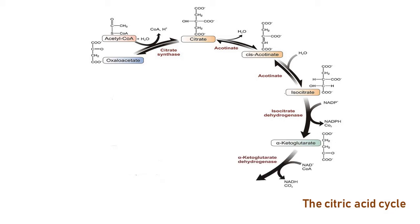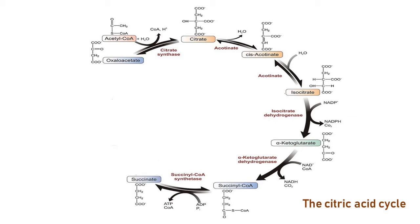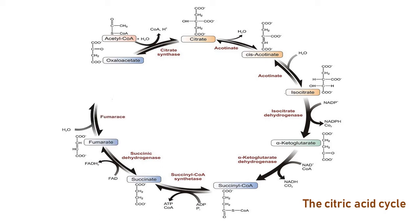Succinyl coenzyme A is enzymatically converted to succinate. This succinate is further oxidized to fumarate. Fumarate is hydrated to produce malate, and at the end of the cycle, malate is oxidized to oxaloacetate. Each complete turn of the cycle results in regeneration of oxaloacetate and the formation of two molecules of carbon dioxide.